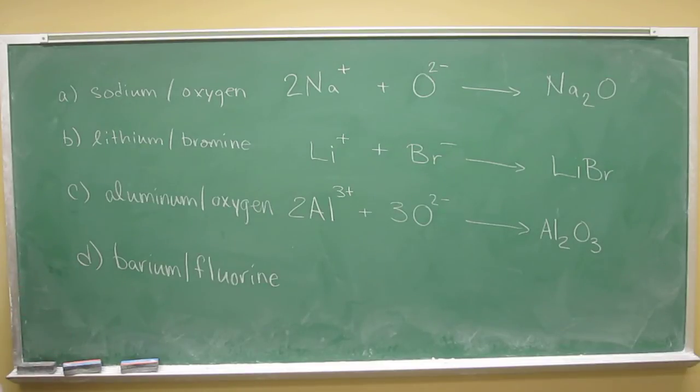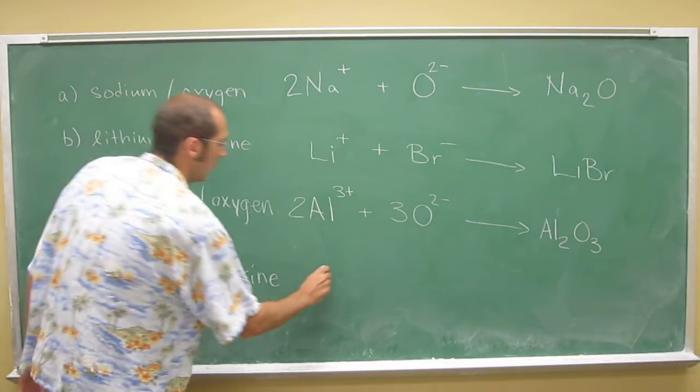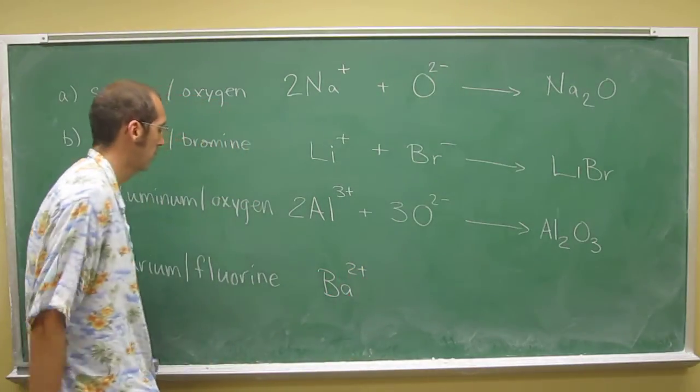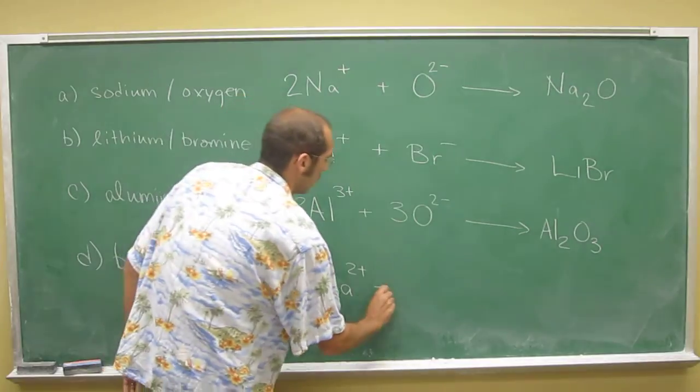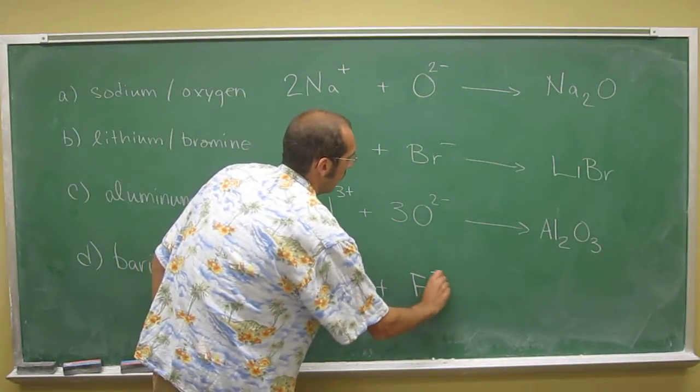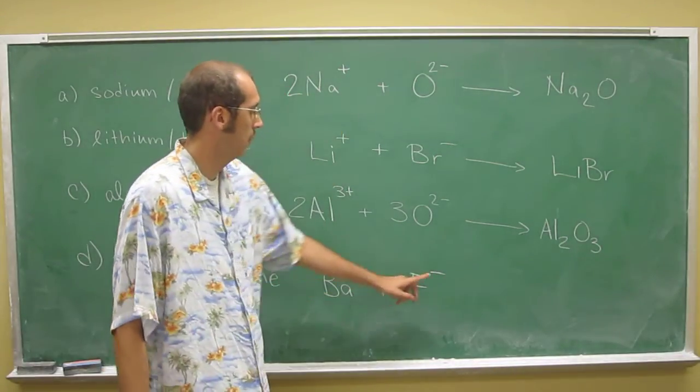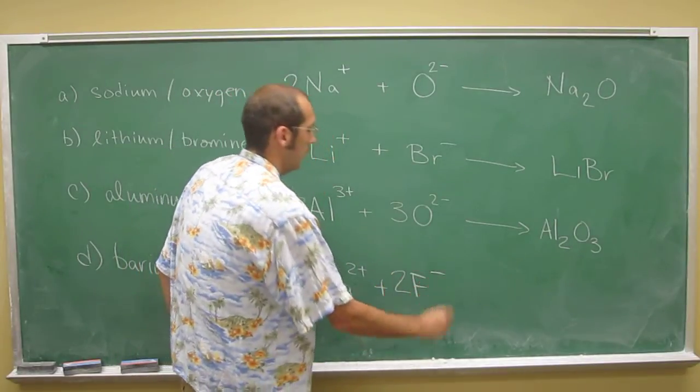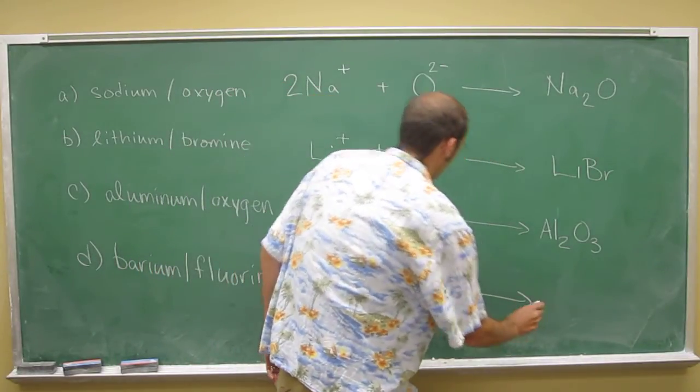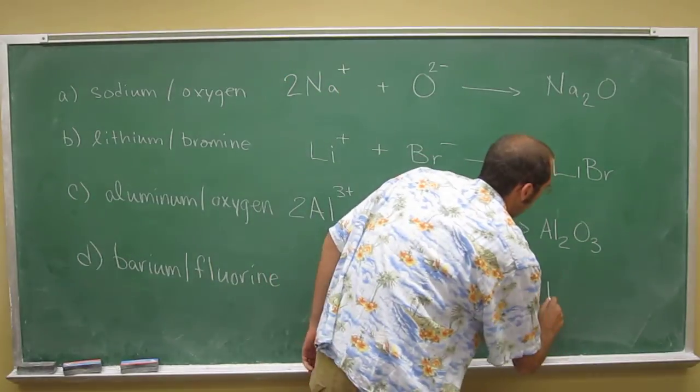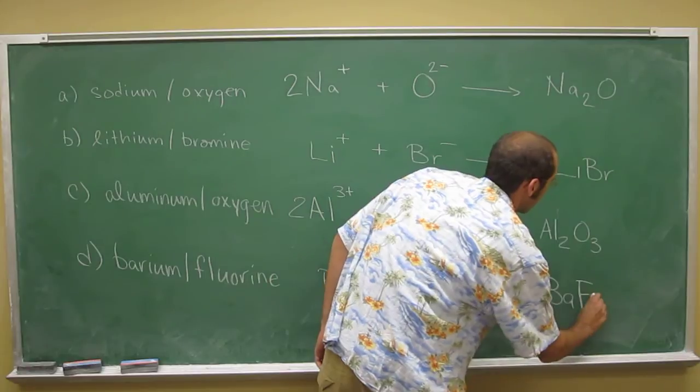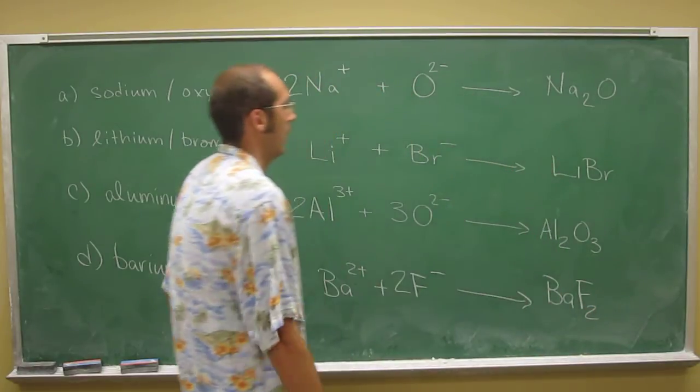And then barium and fluorine. Barium's group 2, so it's going to have a 2 plus charge. Fluorine, halogen, group 17, minus 1. Plus 2, minus 1, don't equal 0. So we're going to have to put a 2 there to make the formula unit of this, which is going to be BaF₂.